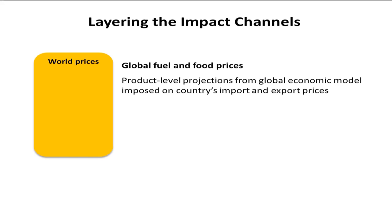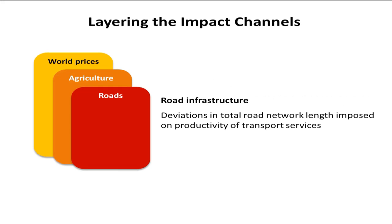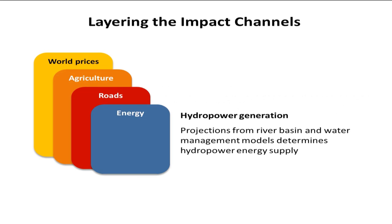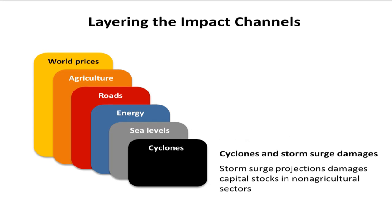So we're going to take these impacts. We start off with a scenario with historical climate, baseline everything, world prices changing. Then we're going to layer in effects. First, we're going to put in the impact on agriculture — as if climate change only affects crop yields and irrigation demand. Then we're going to add the impact on roads, then energy, then sea level rise. Last, we'll add the combination of sea level rise and cyclone strike. In particular, we look at the storm surge from cyclones.